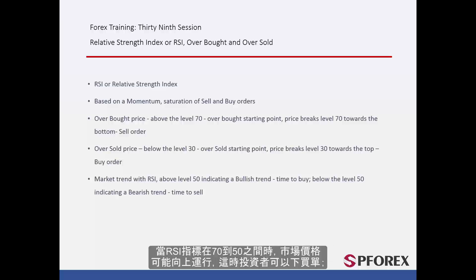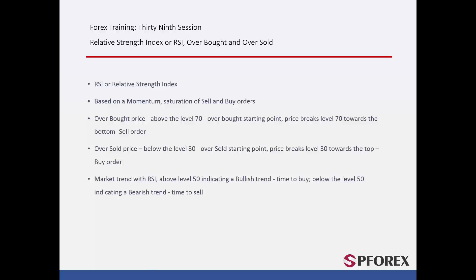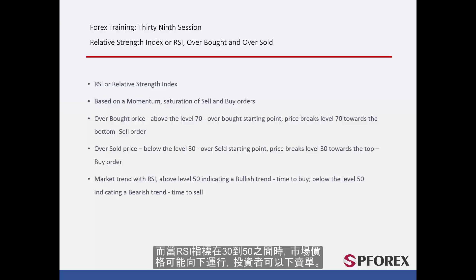When RSI trend is between 70 and 50, market price may have a rising direction, and traders can place buy orders. When RSI trend is between 30 and 50, market price may decline, and traders can place sell orders.